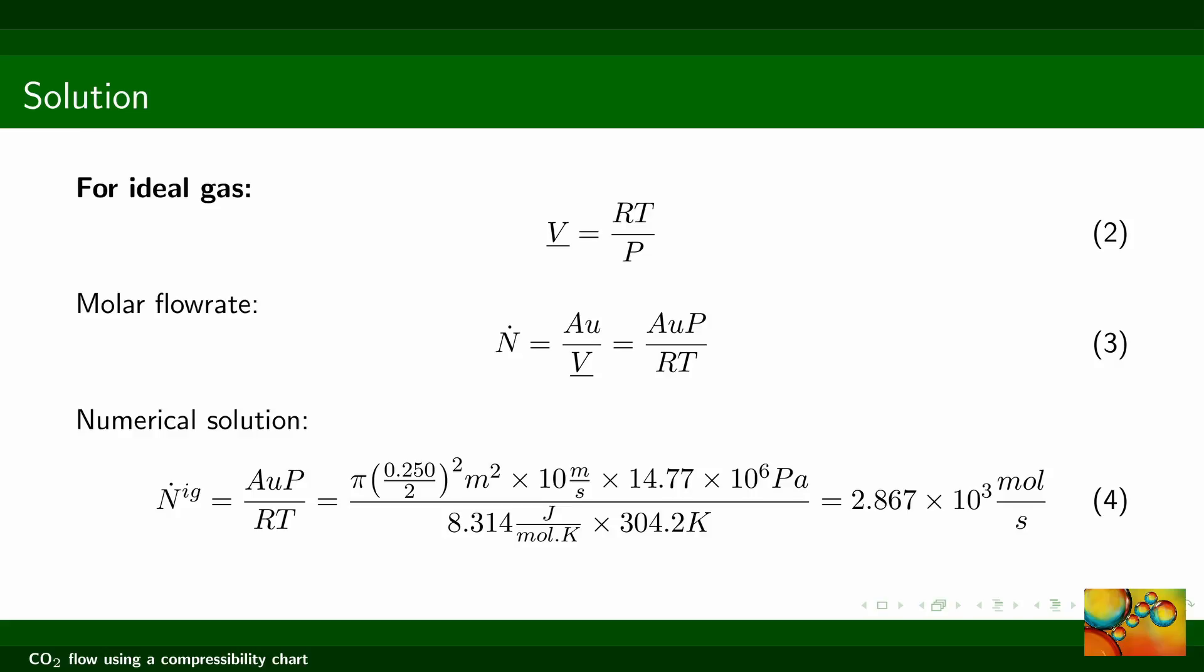Plugging in the numbers, we find that the molar flow rate under the assumption of ideal gas behavior is 2.867 times 10 to the power 3 moles per second. This is the answer of the first item of this problem.